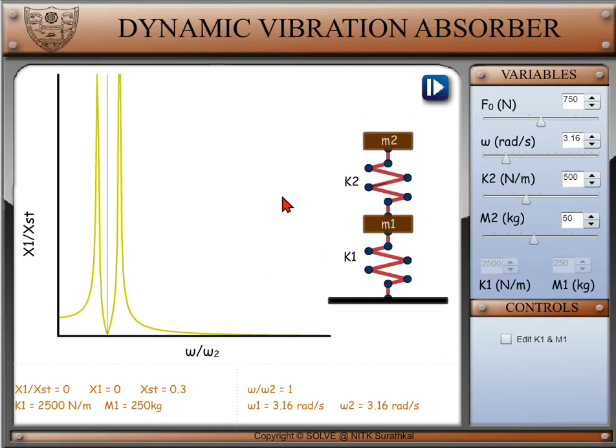Shown below are magnification factor, X1 is the amplitude observed due to forced vibration, Xst is the amplitude of steady state, frequency ratio of omega speed of the system to omega 2 speed of the second body, spring constant k1, mass of the first body m1, omega 1 and omega 2 are speeds of bodies 1 and 2.